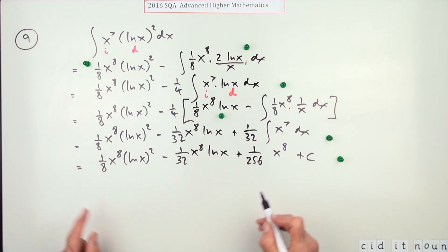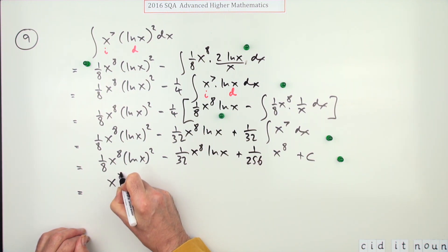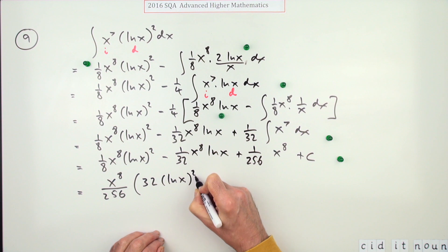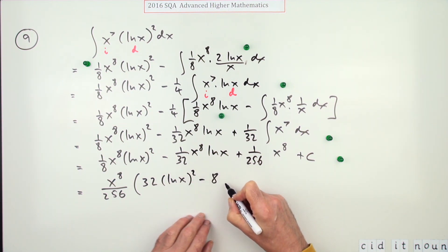Now if you wanted to be fancy, you could tidy up this part of the expression here because there's quite a lot in common. There's x to the power eight in common and there's a common denominator here that you could take out. Something you do later on at university. So you could take out x to the eight and the greatest denominator 256 because the rest have got that in common. And then that would leave you with 32 lots of ln x squared minus eight lots of ln x plus one, and then a plus C. Of course, you don't need this bit.